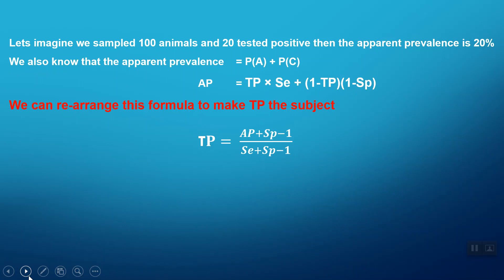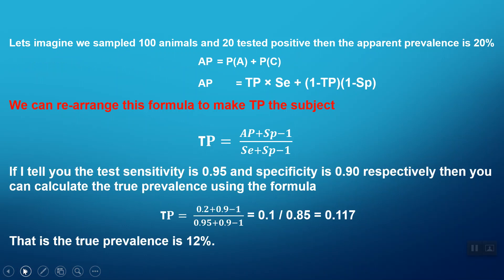We don't at this particular point in time know the sensitivity and specificity, but let's assume that we could find that out. If I tell you that the sensitivity was 0.95 and the specificity was 0.90, then what we're left with is...